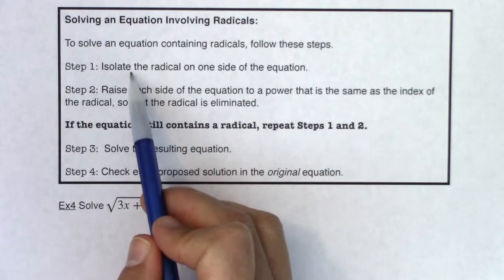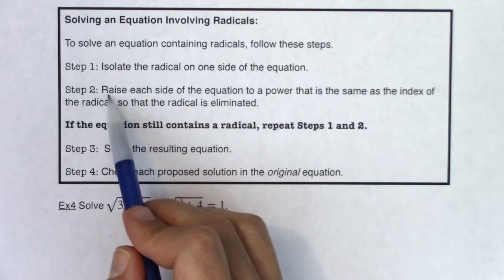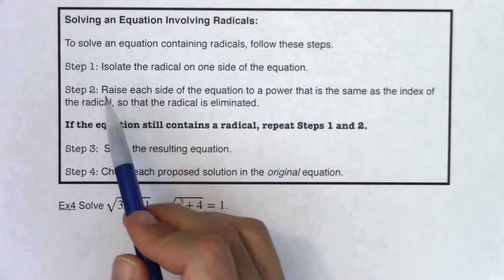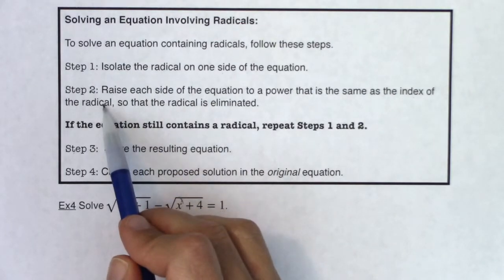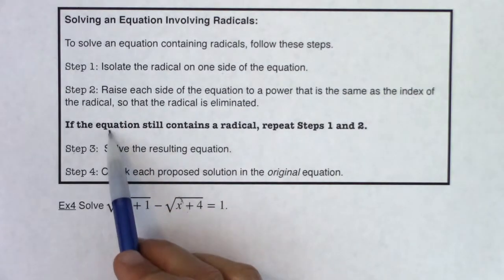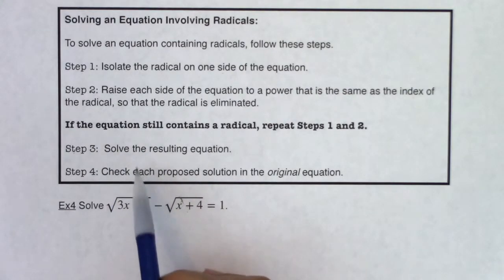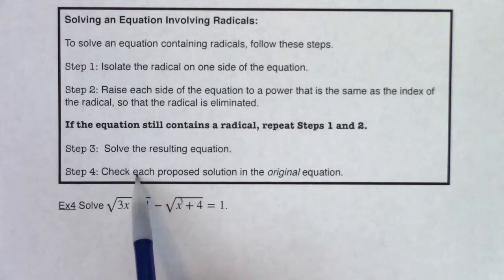Step 1: Isolate the radical on one side of the equation. Step 2: Raise each side of the equation to a power that is the same as the index of the radical, so that the radical is eliminated. If the equation still contains a radical, repeat steps 1 and 2. Step 3 and 4: Solve the resulting equation and check each proposed solution in the original equation.